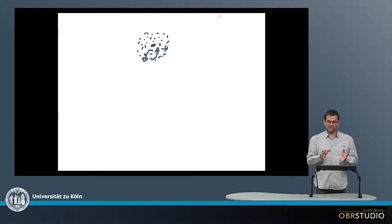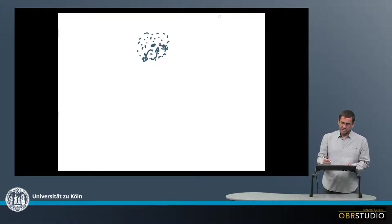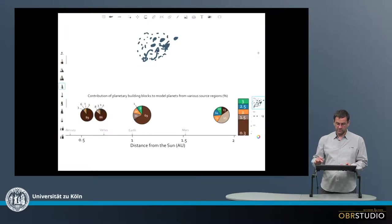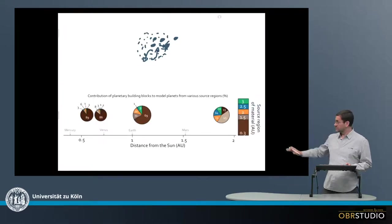And then it is interesting to study from which regions planetesimals originated to form, for example, Earth, Venus, Mercury, Mars, and so on. And these kind of models have, of course, been performed, and this is shown in this plot down here.